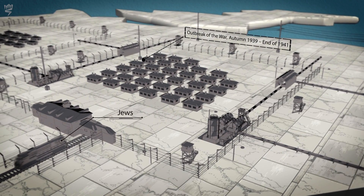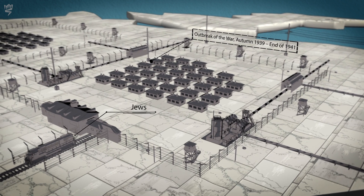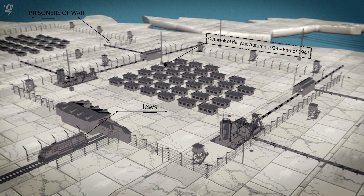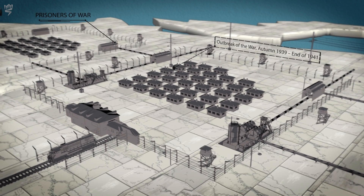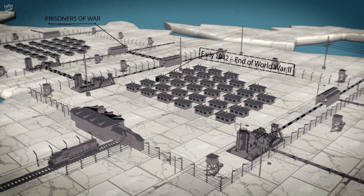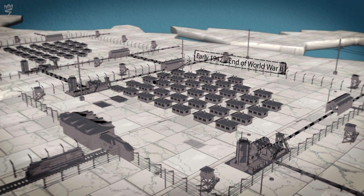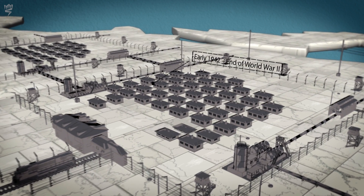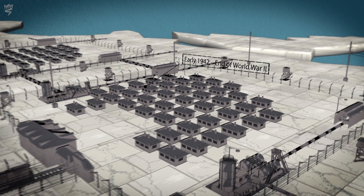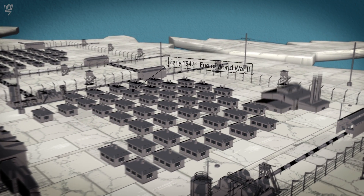During this period, prisoners of war camps and other concentration camps were constructed as well. The number of concentration camps constructed in Germany and throughout Europe continued to increase. From this point on, the concentration and labor camps were used for massive and brutal exploitation of prisoner labor and for implementing the policy of mass murder of Jews.